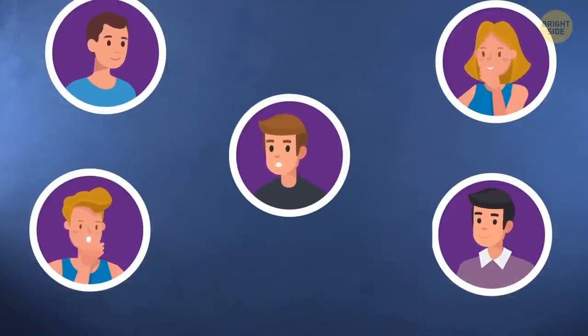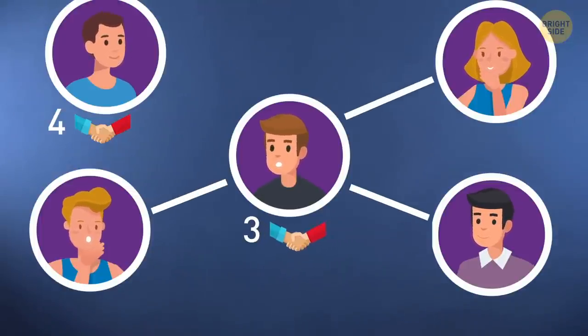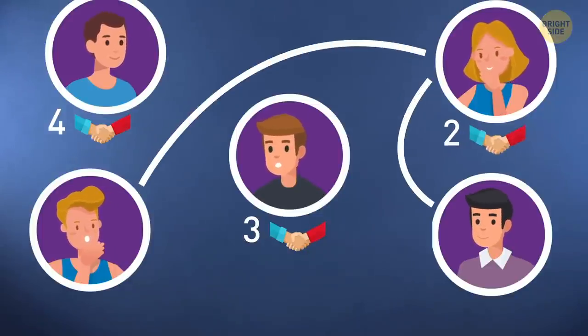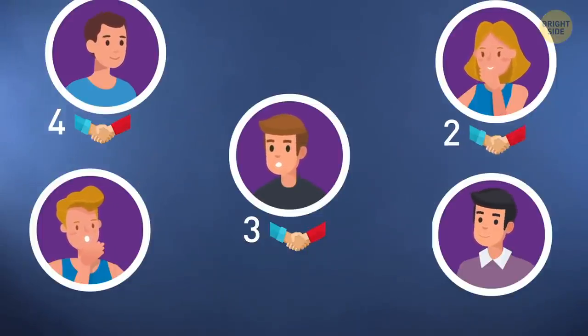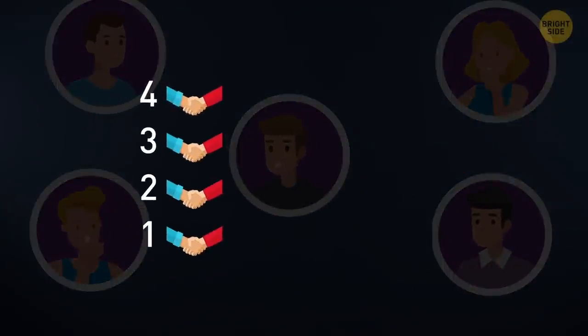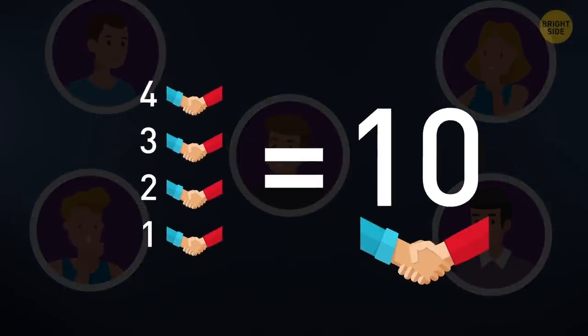No handshakes were repeated. Let's see it like this. The first friend shook the hands of the four remaining people once. Then the second friend had already shared a handshake with the first person, so they shook hands with three more people. The third friend had shaken hands with the first two, so he shook hands with two more people. And then, finally, friends four and five shook hands too. Four plus three plus two plus one is equal to ten. So, there were ten handshakes.